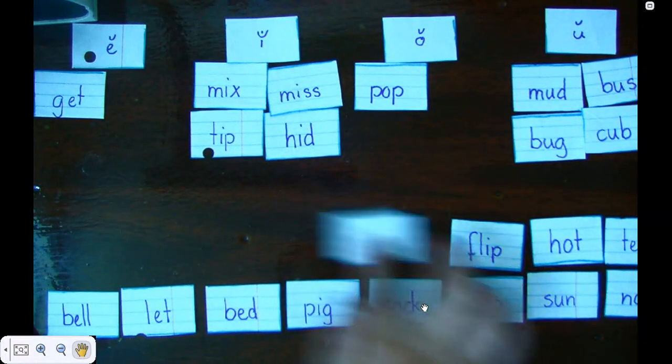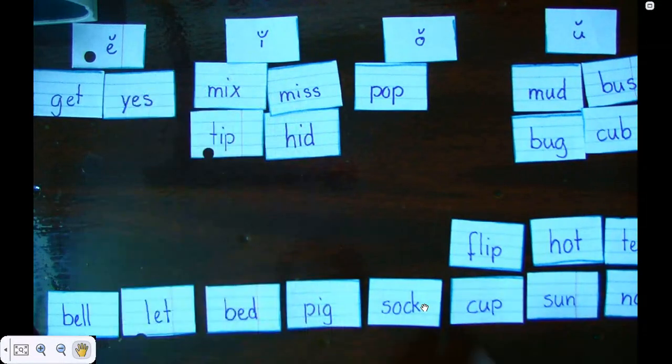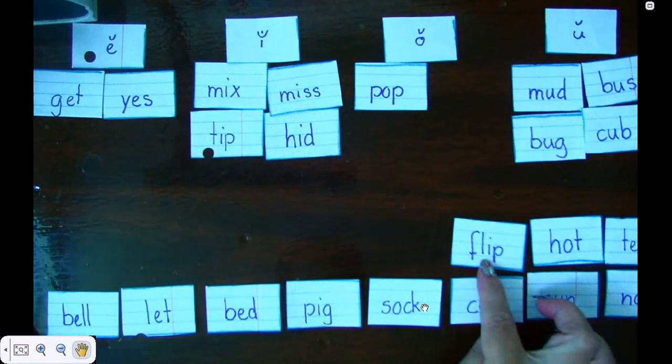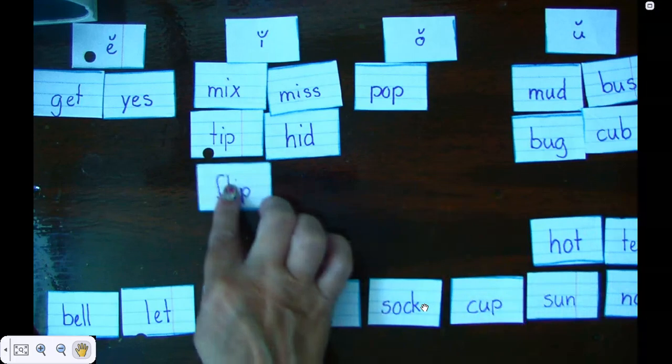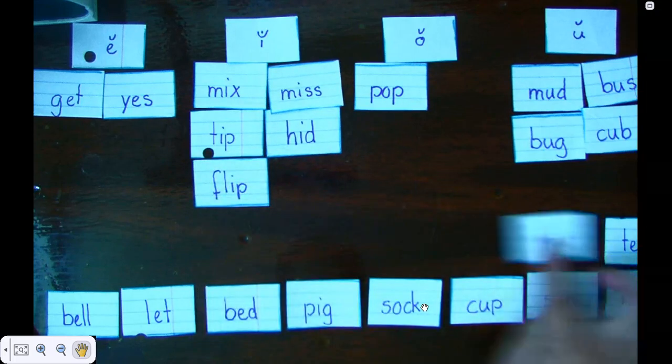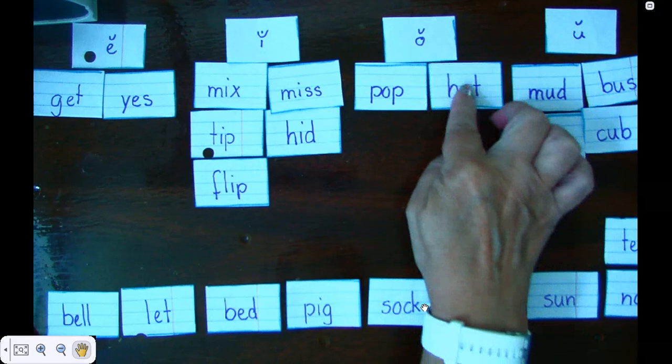Yes has an E, so it goes in my E column. Flip has an I, so it goes under my I column. Hot got an O, it goes in my O column.